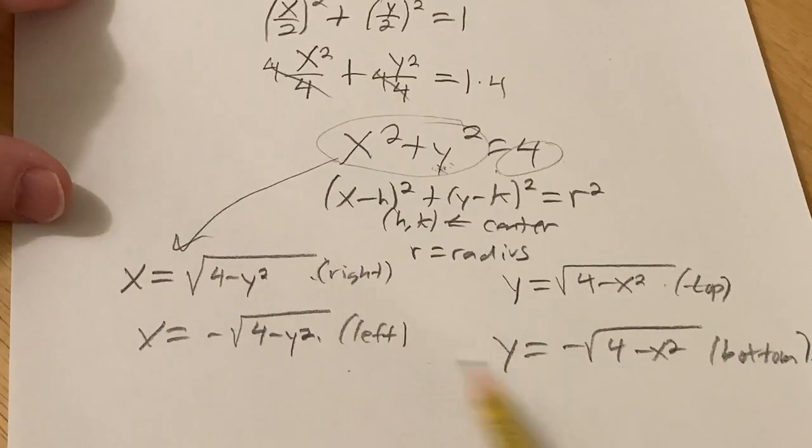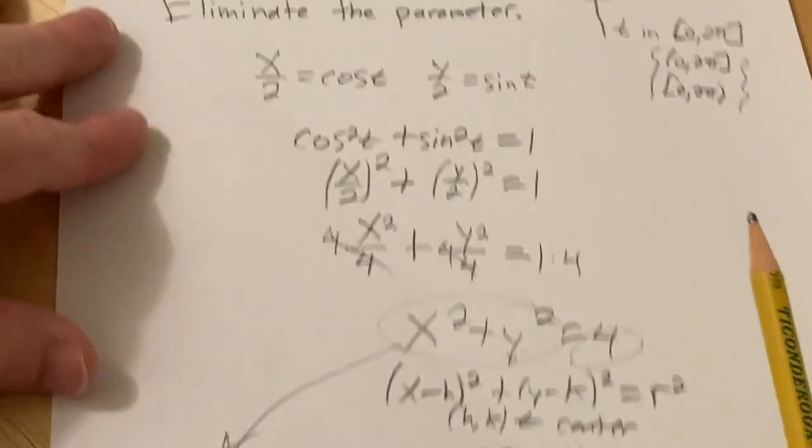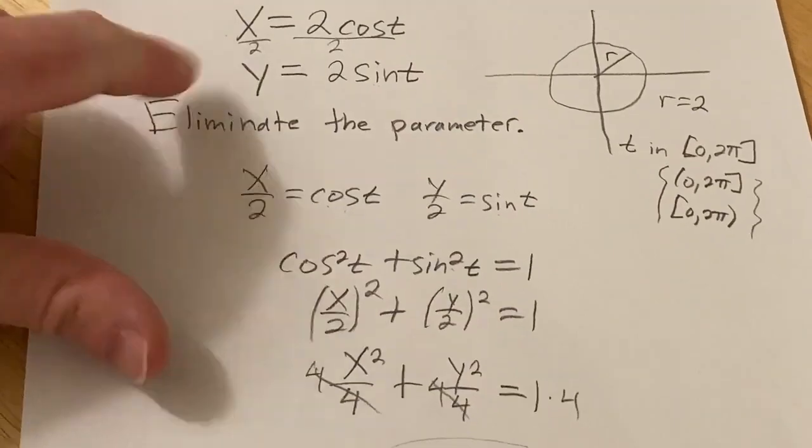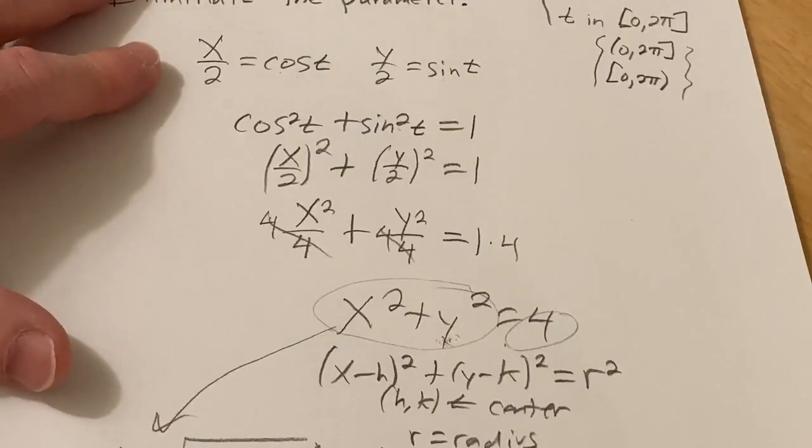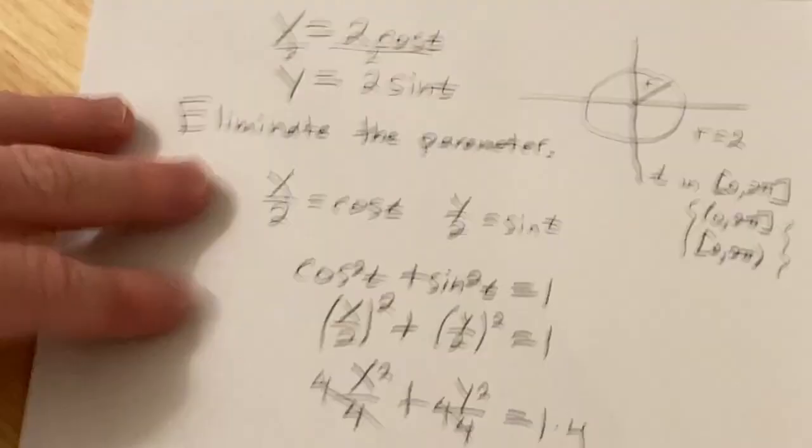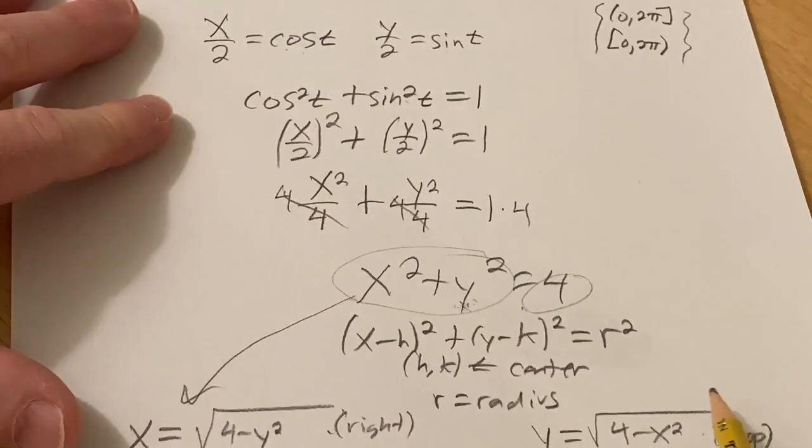And then you could differentiate these and stuff, find the rate of change, or you could also differentiate these and it's a little bit easier. So all kinds of cool math and a very simple problem, right? All you have to do is eliminate the parameter. But there's a lot going on here.